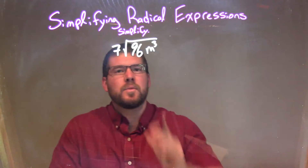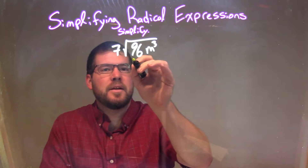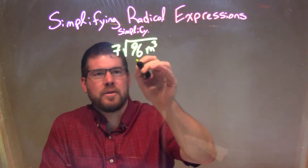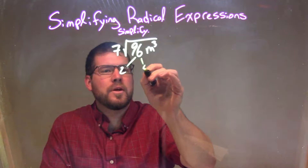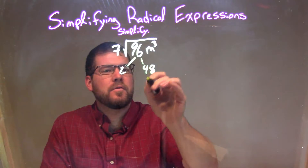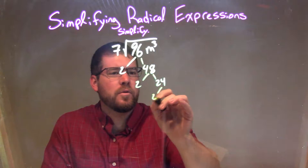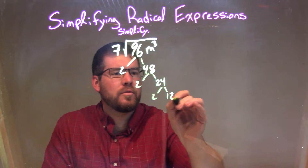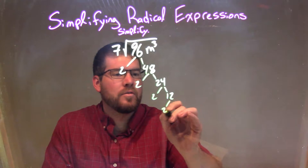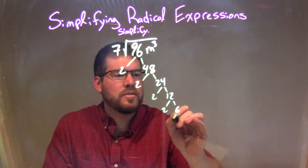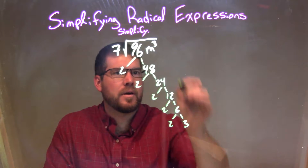First things first, we need to break down 96. The prime factorization of 96 is 2 and 48. 48 is 2 and 24. 24 is 2 and 12. And 12 is 2 and 6, and 6 is 2 and 3.